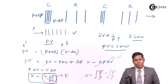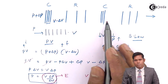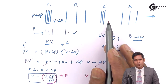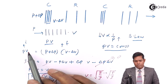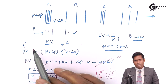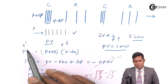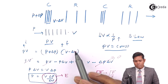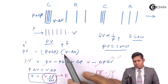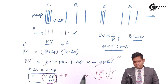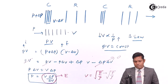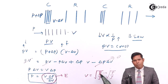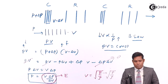What Laplace did was change the idea from an isothermal process to an adiabatic process. Using PV^γ = constant and solving similarly, you derive that E = γP. So the only modification is the introduction of gamma, making the speed of sound formula more accurate and in agreement with experimental results. Thank you.